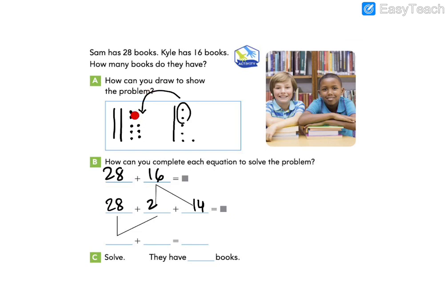We know our next tens number will be when we add our two ones. Our next tens is 30. Then we need to add our remaining 14.